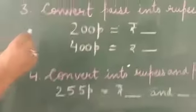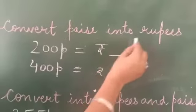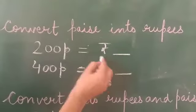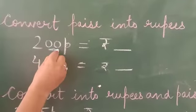Next: convert paise into rupees. You have to convert paise into rupees. The last two digits, you leave them.